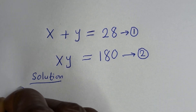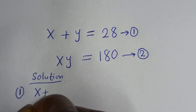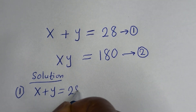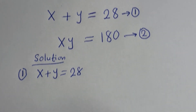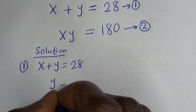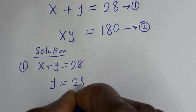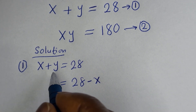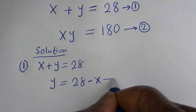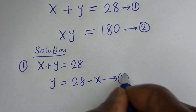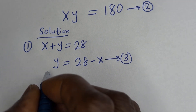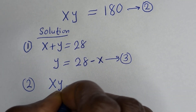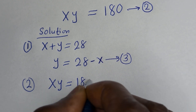Then from equation 1, S plus Y is equal to 28, so Y is equal to 28 minus S. You may also make S the subject of the formula. Let's call this equation 3. Then from equation 2, S times Y is equal to 180.